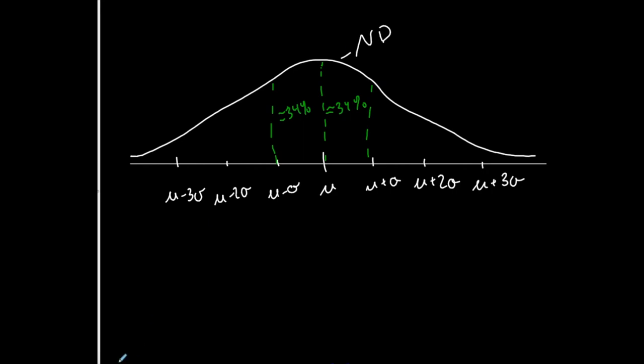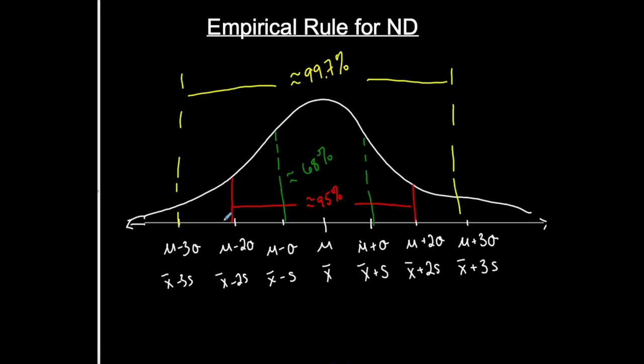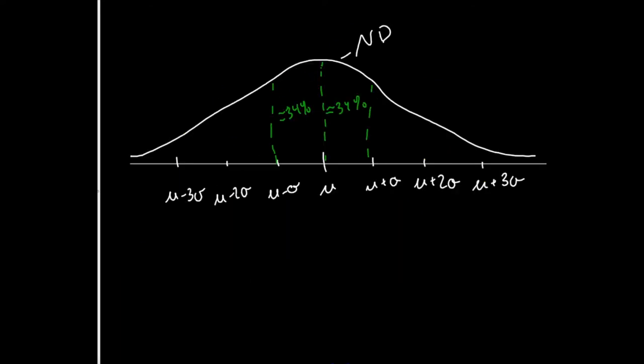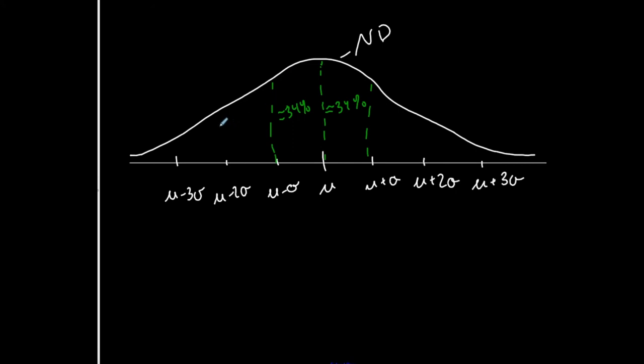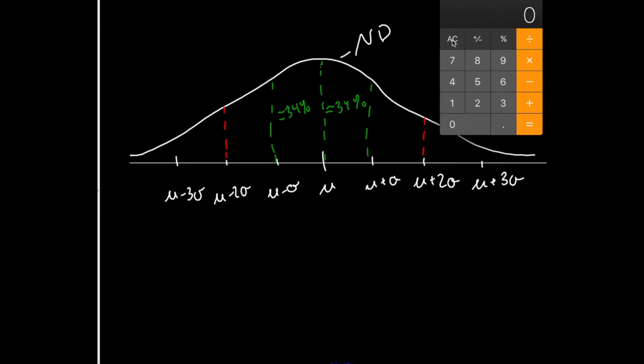We said that within two standard deviations, 95% of the data values were there. So let's go ahead and do that. From this location to this location, 95% of the data values lie from here to here.